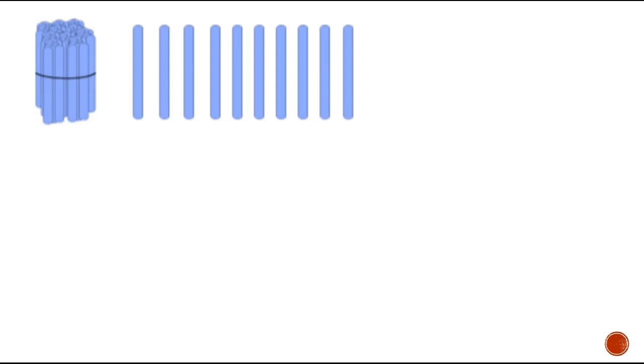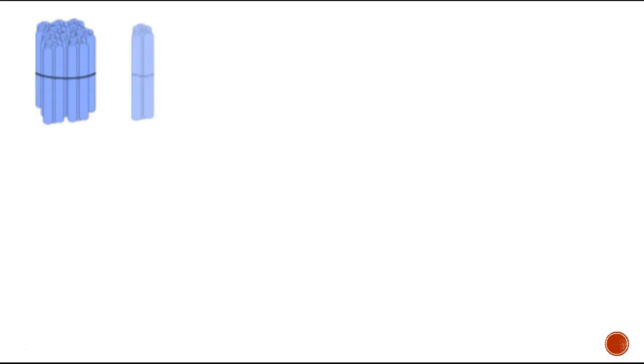Now I have 10 straws here. So what can I do with these 10 straws to make it easier on myself? Right, I could take all of these 10 straws and bundle them into one bundle of 10. So now I have two bundles instead of one bundle and a bunch of extra loose straws. So I have 100 here plus 10, so 110.